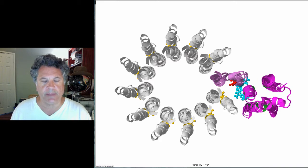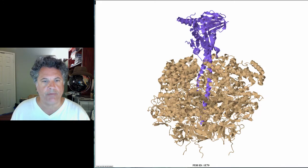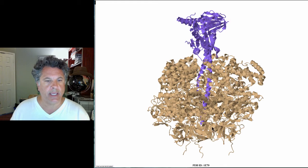What we've been looking at so far is a bacterial protein. This is one from vertebrate, from cow. Here we have the central axle, the rotor would be above, and here is the catalytic F1 domain which consists of six subunits.